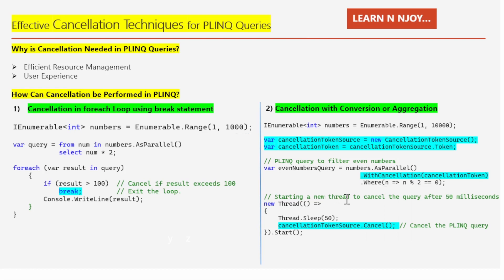Then I am starting a new thread using a lambda expression. Inside the lambda, I am making the thread sleep for 50 milliseconds before cancelling the PLINQ query. After 50 milliseconds, the statement `cancellationTokenSource.Cancel()` is executed, which is responsible for cancelling the PLINQ query using the specified cancellation token. This example shows us how cancellation can be performed in PLINQ queries using a cancellation token.